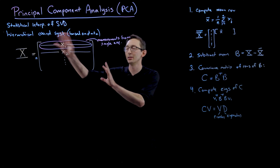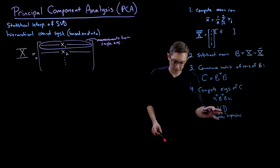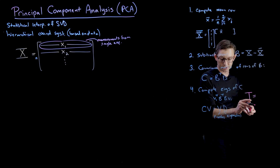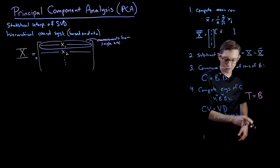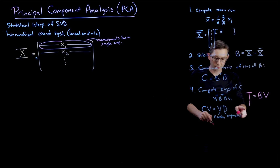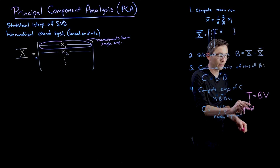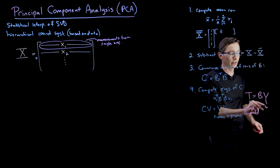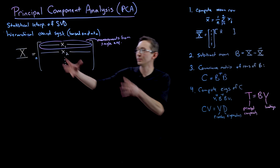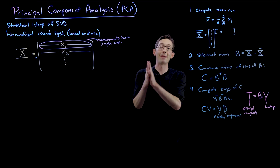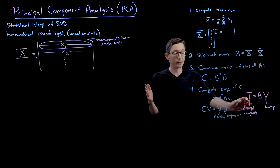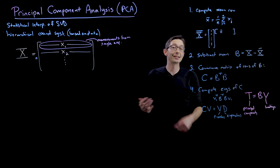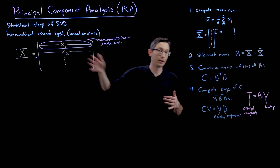We've computed the eigenvalue decomposition of the covariance matrix — you can actually do this via the SVD, as I'll show in a minute. The principal components come in through the matrix T, which equals the mean-subtracted data B times the eigenvectors V. These are called the principal components. The eigenvector matrix V is called the loadings — how much of each principal component each experiment contributes.